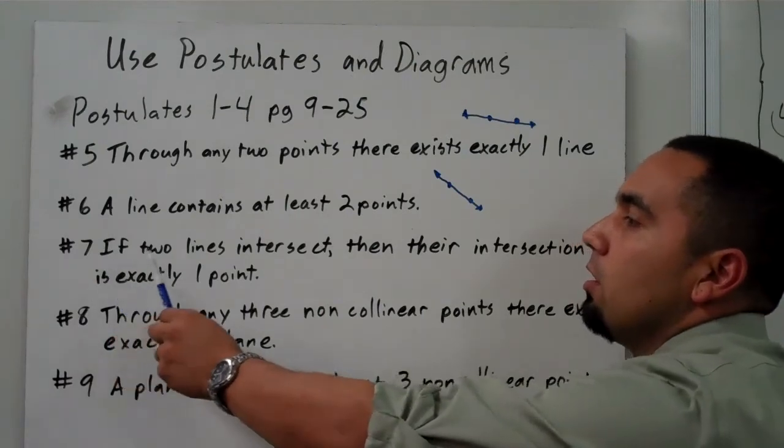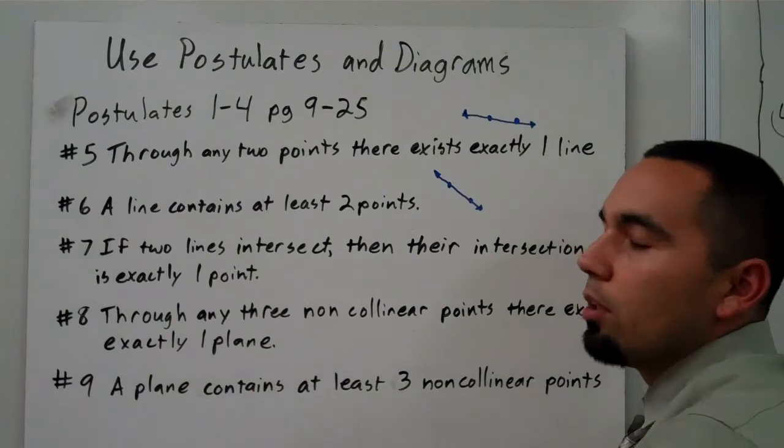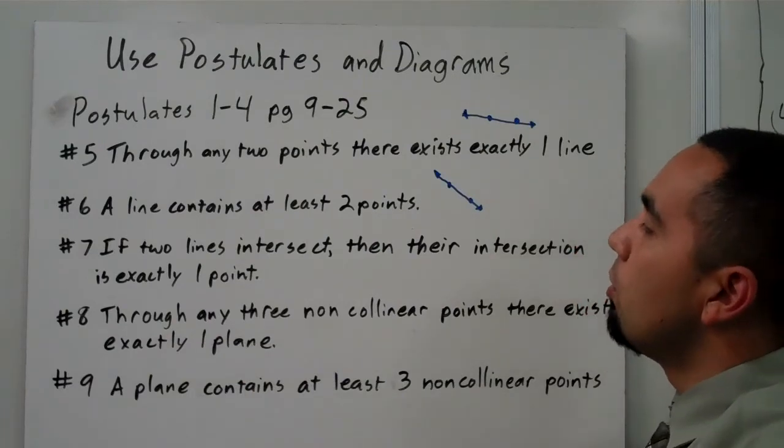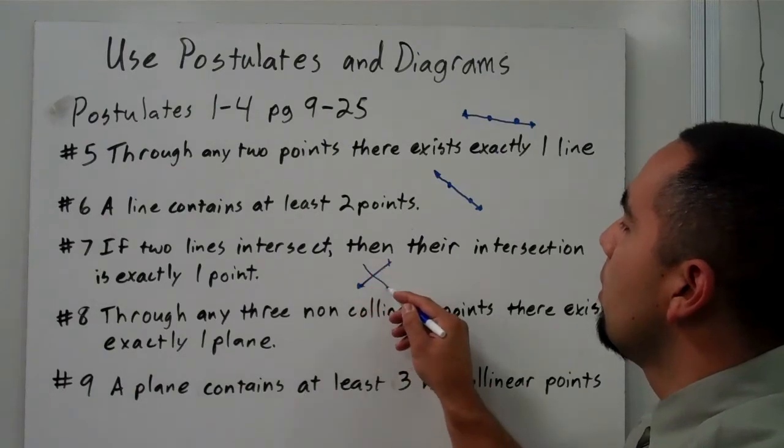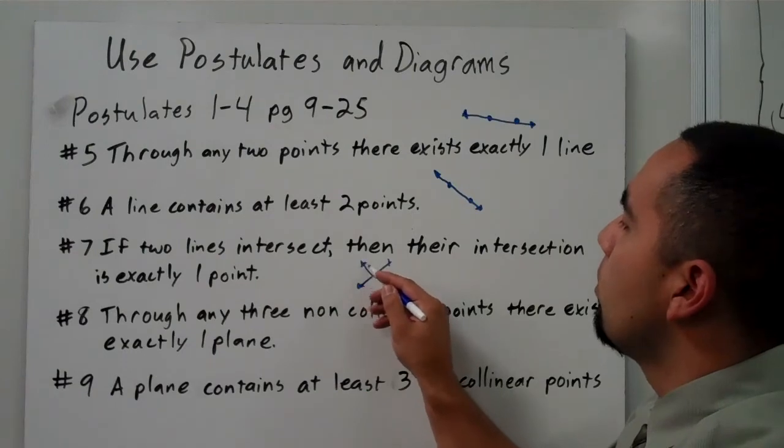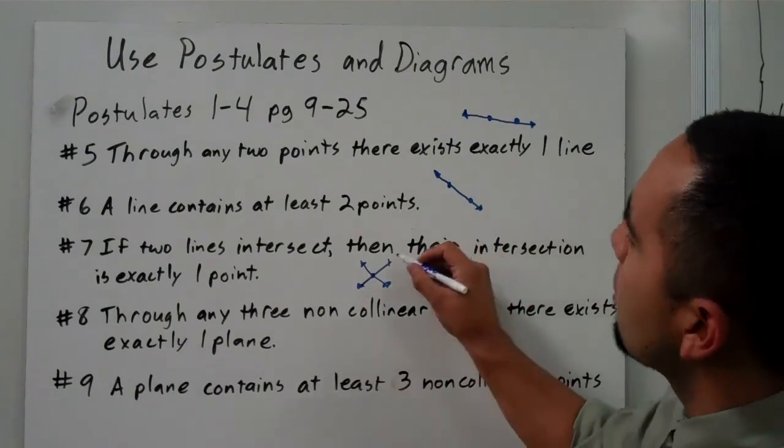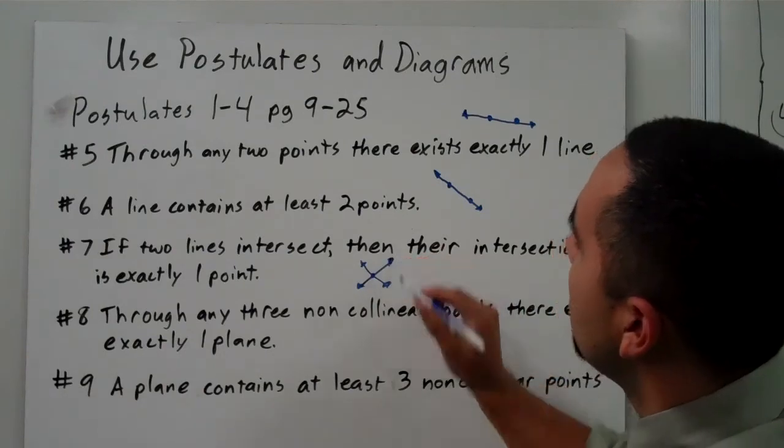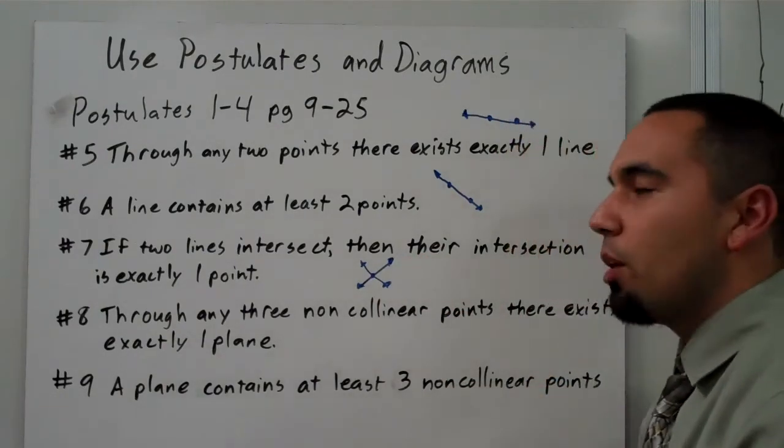Number 7, if two lines intersect, then their intersection is exactly one point. So again, two intersecting lines, we remember what this looks like, they are always going to intersect at one point. And again, if we remember postulates, these seem pretty simple. It's because postulates are pretty much just real basic statements that we can easily prove.